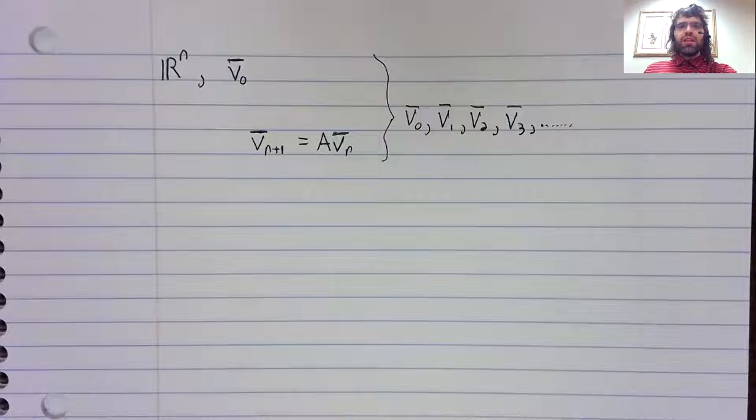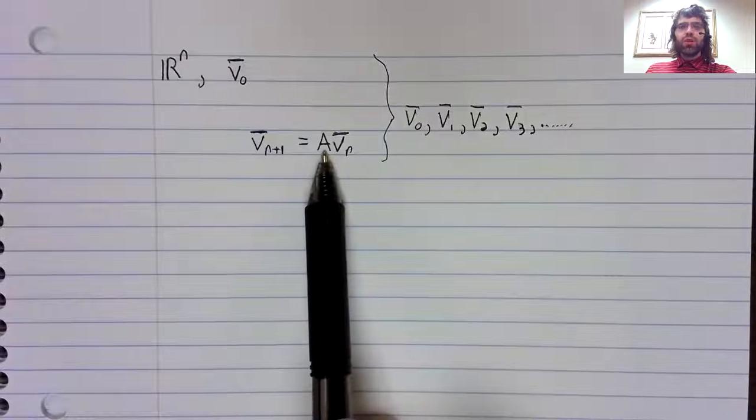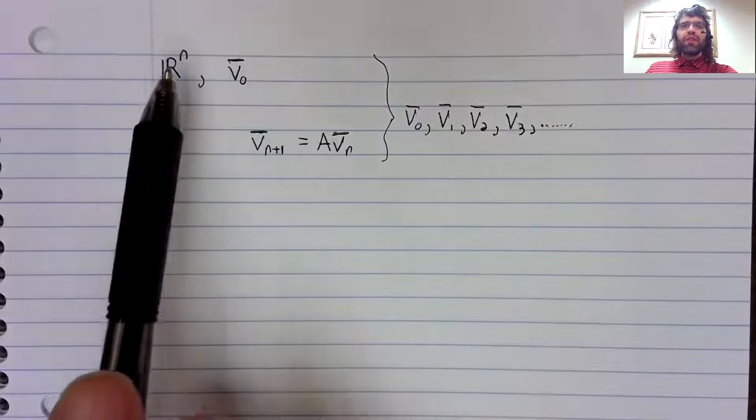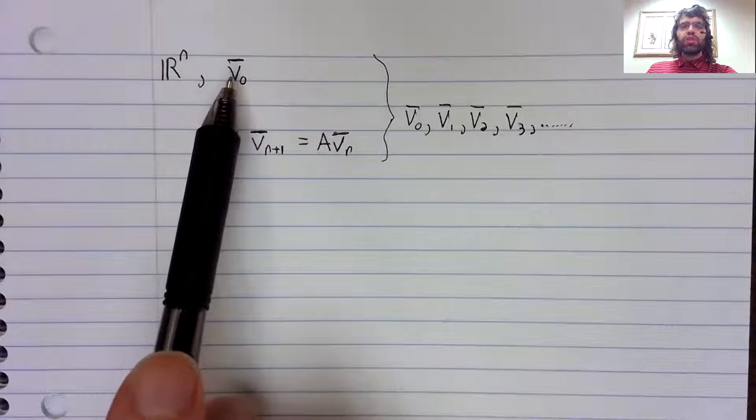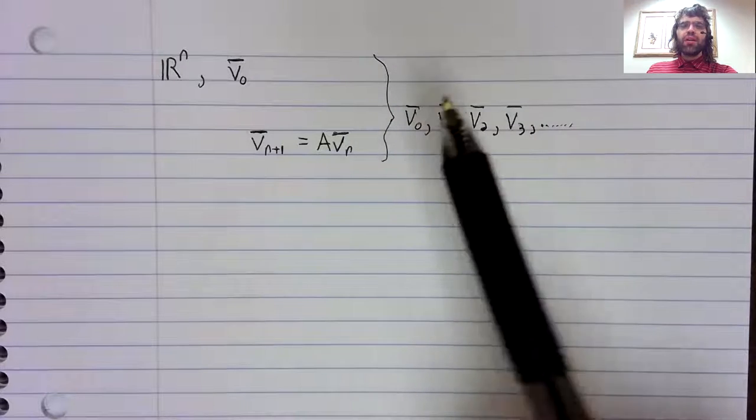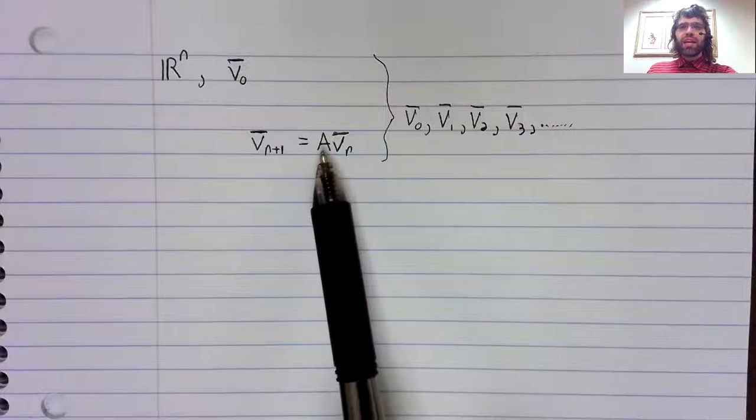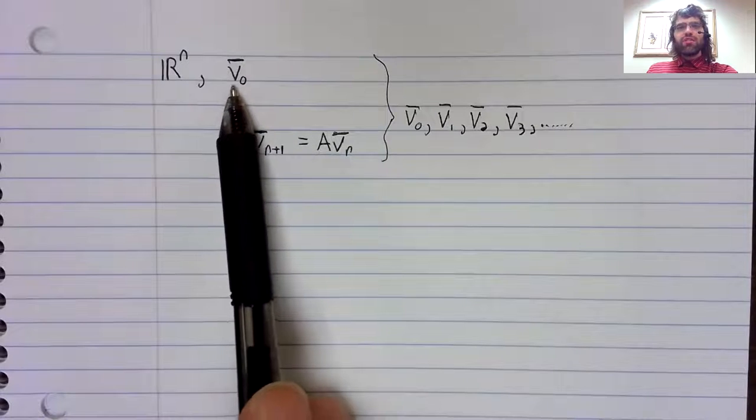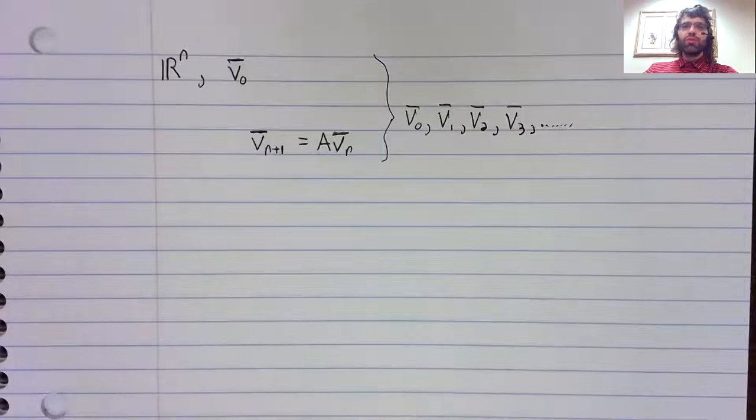In the case where A is a stochastic matrix and V_0 is a probability distribution, this is a Markov chain. But A doesn't have to be stochastic, and V_0 doesn't have to be a probability distribution.